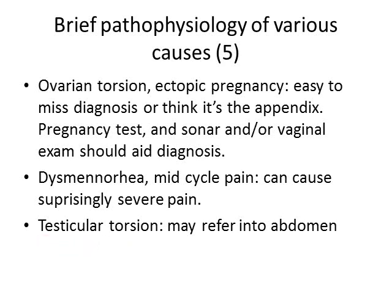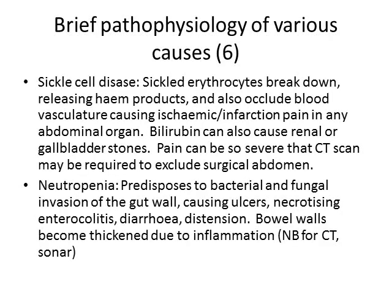Testicular torsion usually causes severe scrotal pain, so it's not often confused for acute abdomen, but the pain can refer into the abdomen. Sickle cell disease is known to present with abdominal pain in acute crisis — the sickled erythrocytes break down releasing heme products, and sickle cells themselves can block the vasculature causing ischemic pain or infarction due to lack of oxygen in any abdominal organ. Excess bilirubin can also cause renal or gallbladder stones. Pain can be so severe you may need a CT scan to decide whether surgery is necessary — if the CT is normal, give pain medication and let the sickle cell crisis resolve.